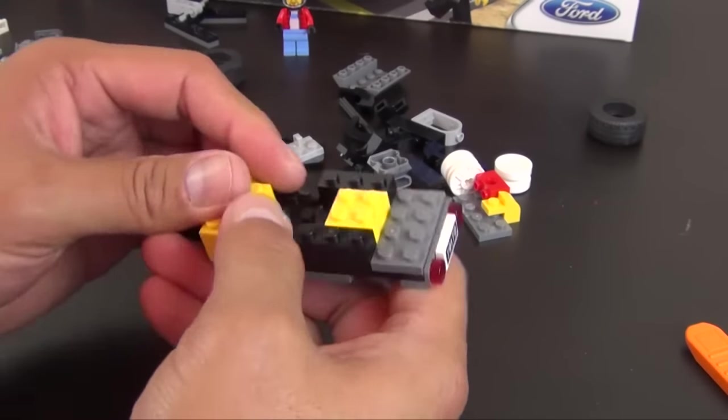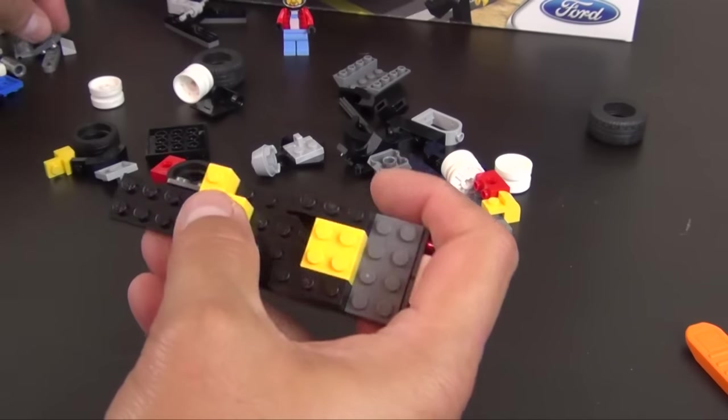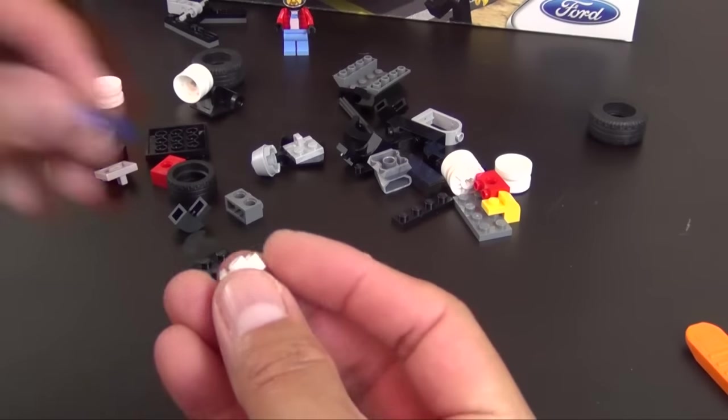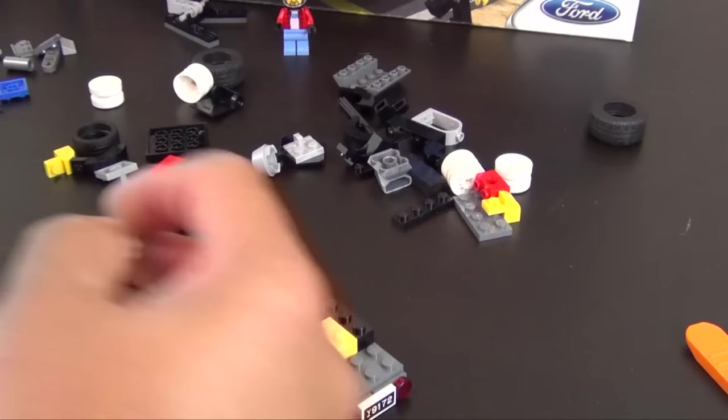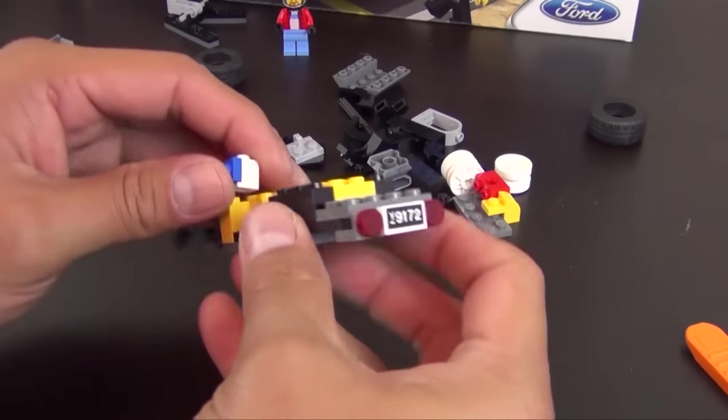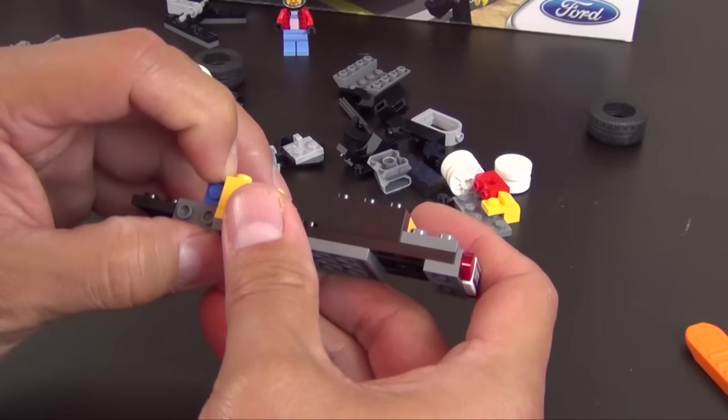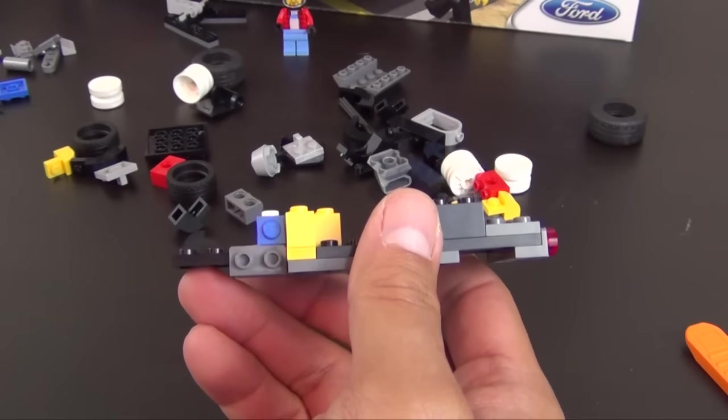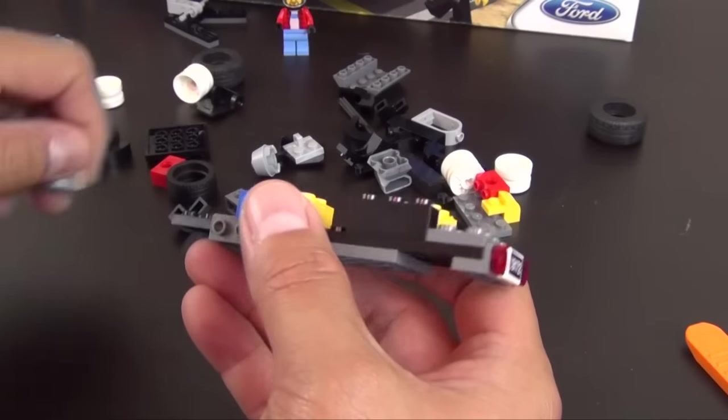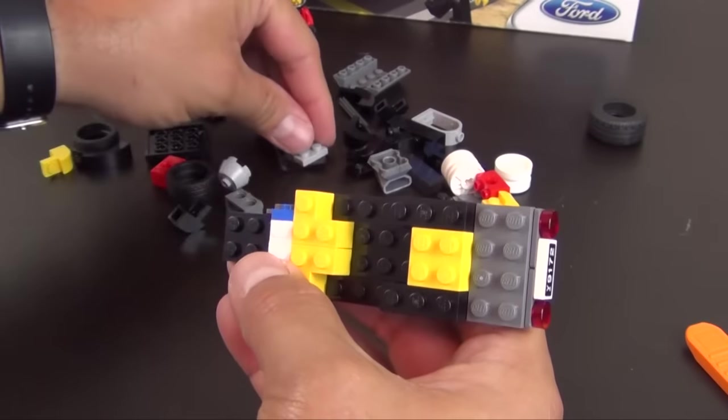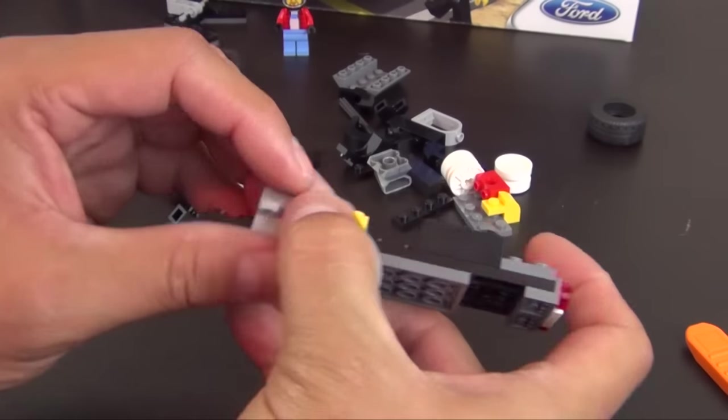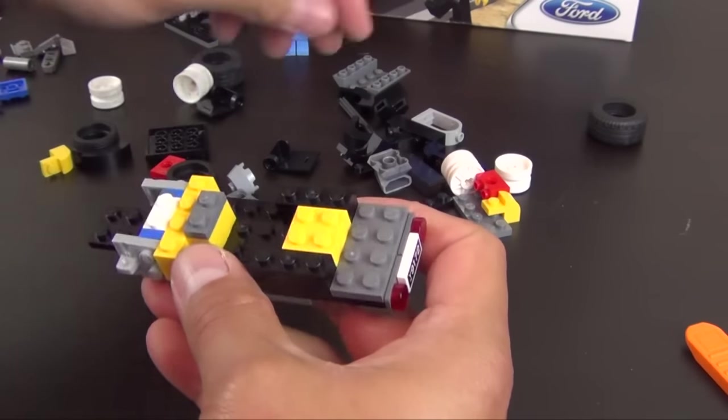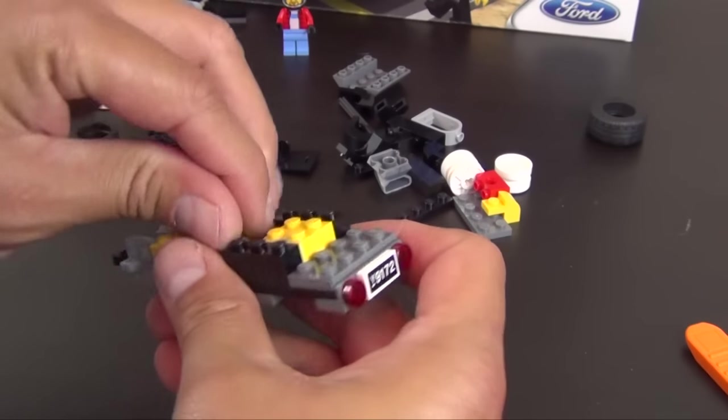A couple corner bricks, some brackets, two headlight bricks, each one has a one by one plate on it. We have these modified plates with the click hinge bar in the middle. Steering wheel.